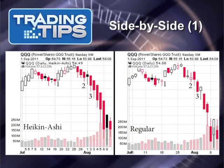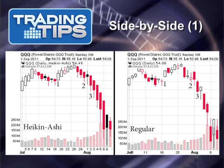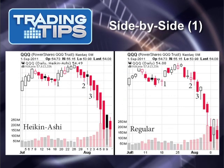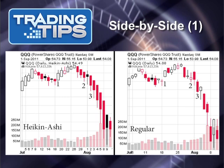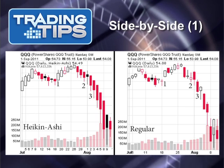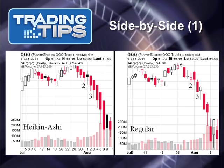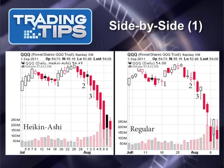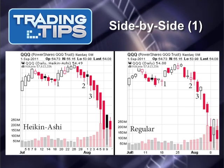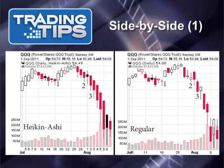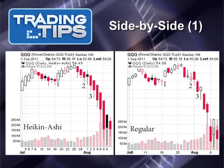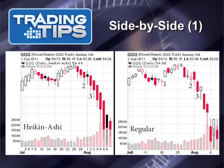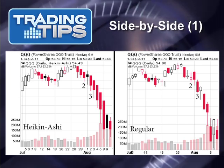Now look at point one. With the regular chart on the right, we see a big gap up that could be interpreted bullishly. Indeed the stock did trend higher for a short period before plummeting for huge losses. Meanwhile the Heikin-Ashi candlesticks show no such gap up. In other words, the regular candlestick chart gave us a false signal.